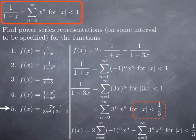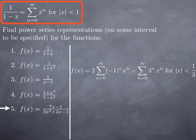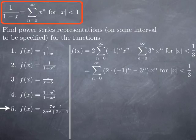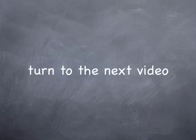Under this condition, we replace 1 over 1 plus x and 1 over 1 minus 3x by their power series representations, both valid for x between negative 1 third and 1 third. Putting them together, f of x equals the sum from 0 to infinity of 2 times negative 1 to the n minus 3 to the n, all multiplied by x to the n. In the next video, we are going to see that power series can be differentiated and integrated just like polynomials, and we will see how to use that to find power series representations for further functions.